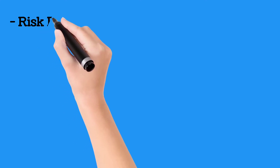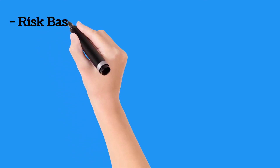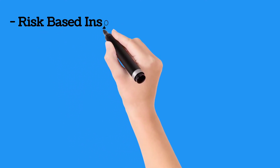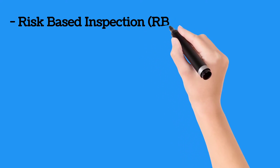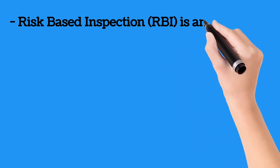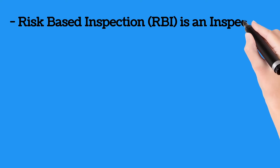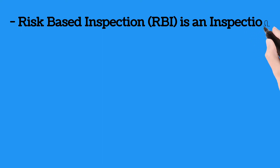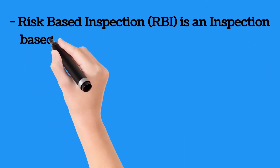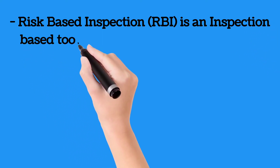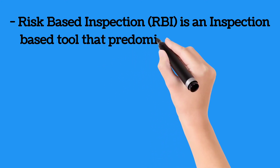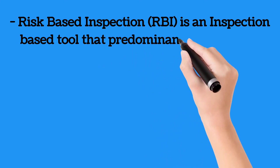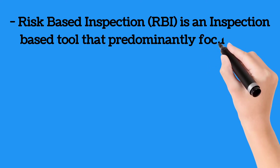Risk based inspection, RBI, is an inspection based tool that predominantly focuses on anticipating hazards or issues. RBI is a preventive based inspection approach. The calculated risk as an outcome of risk based inspection is a combination of probability of failure combined with consequence of failure.